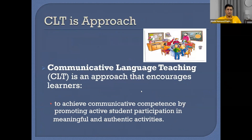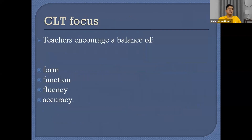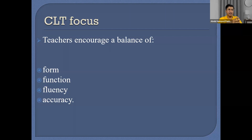CLT is an approach to achieve communicative competence by promoting active student participation in meaningful and authentic activities. Teachers encourage a balance. CLT is not only focused on functional aspects of language — it actually includes all these components: form, function, fluency, and accuracy. Form is necessary — it can be your novel, your presentation. Without form, you are not organized. Form is related to organization, to structure, and to what you are actually using to express your views.